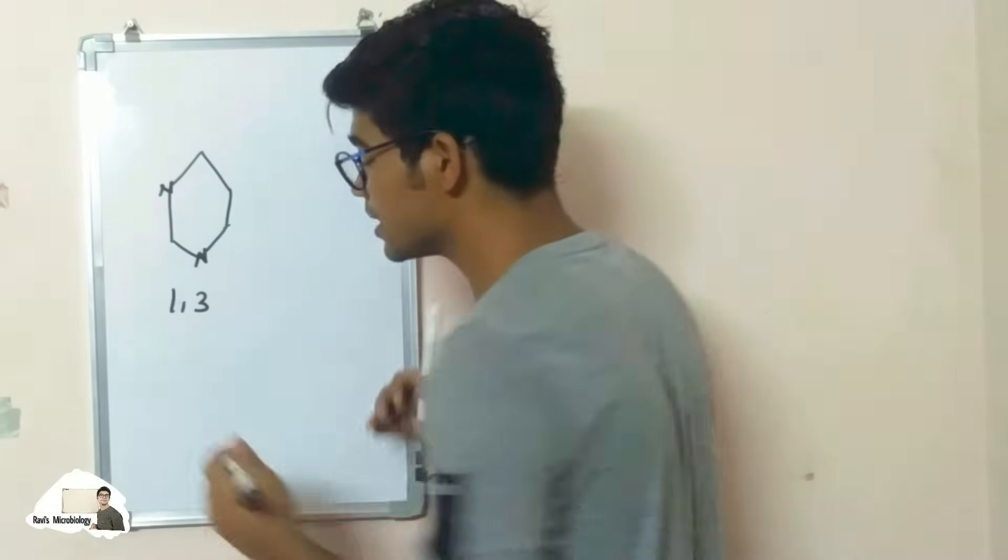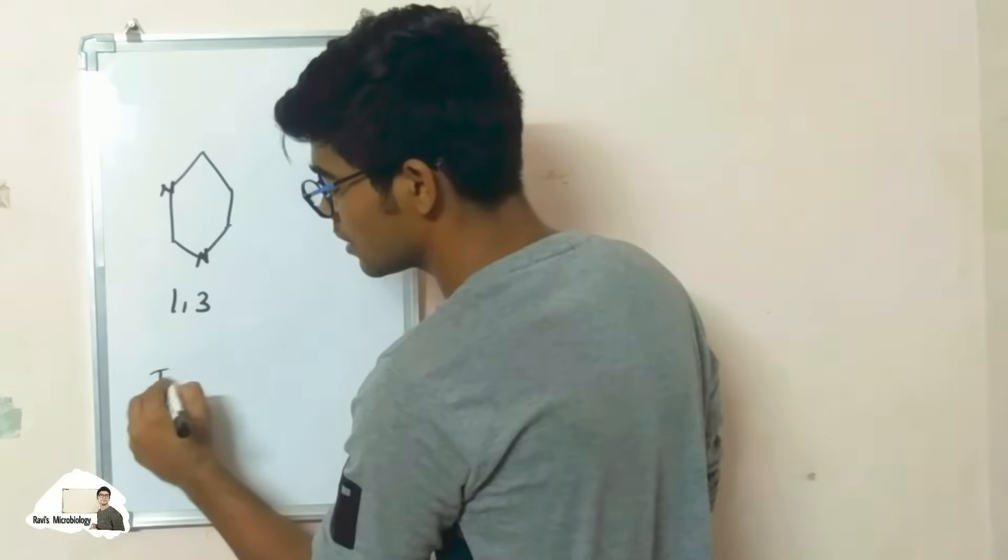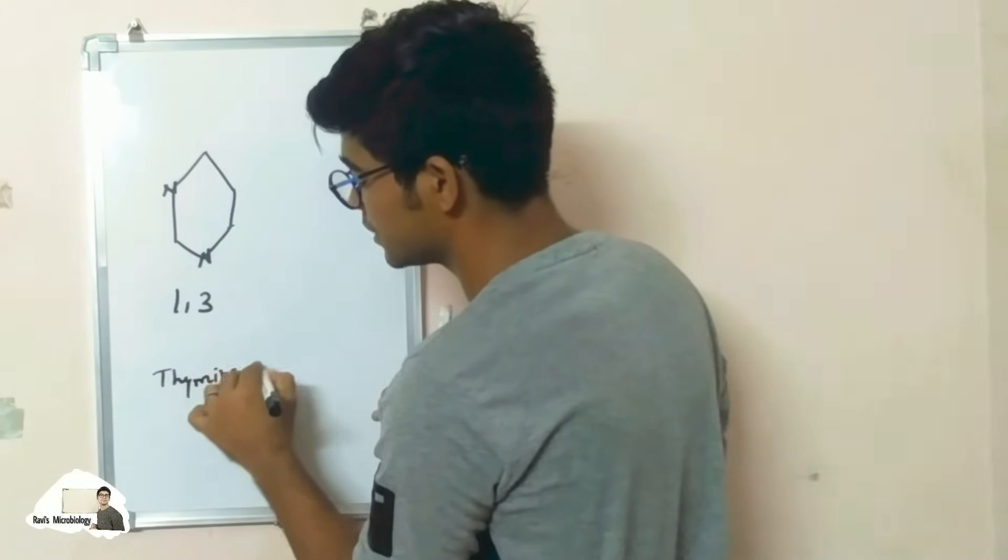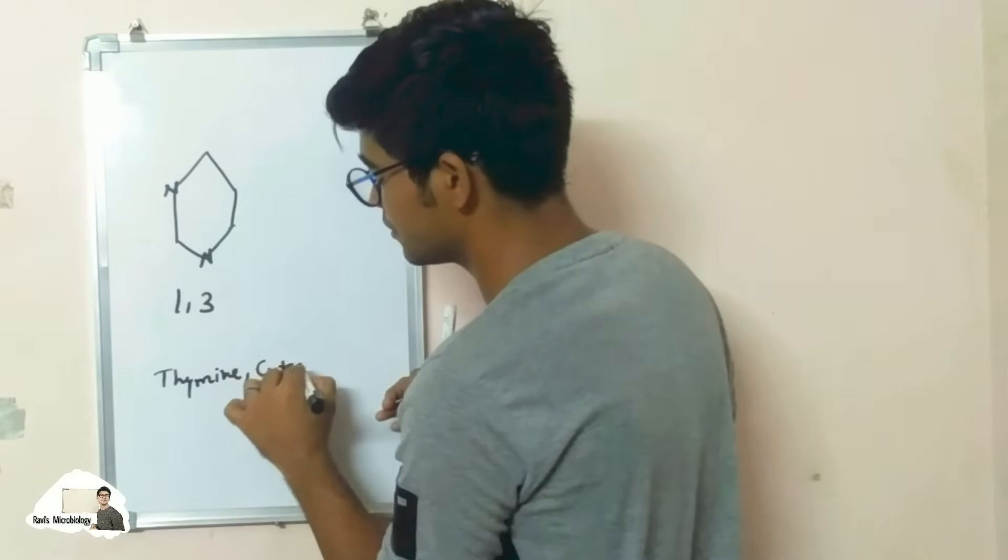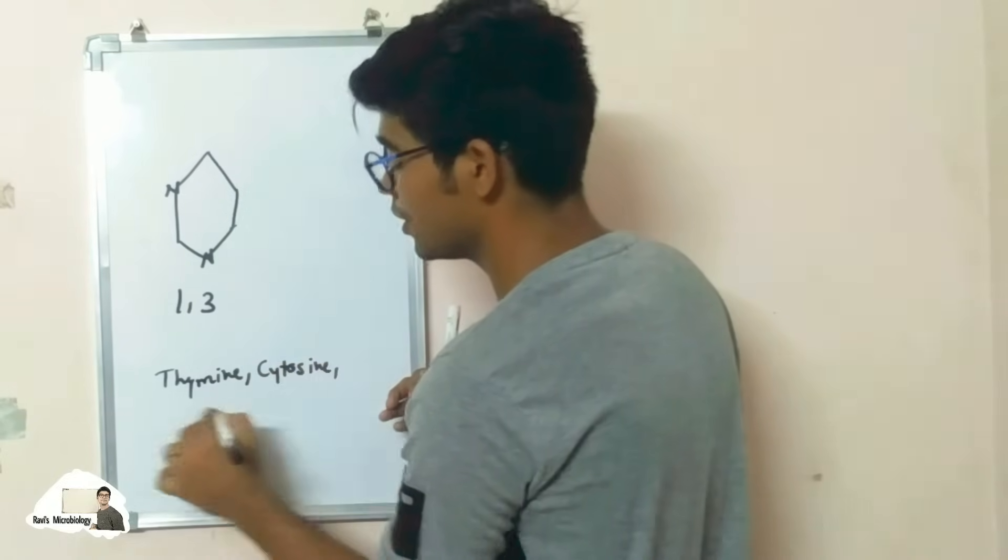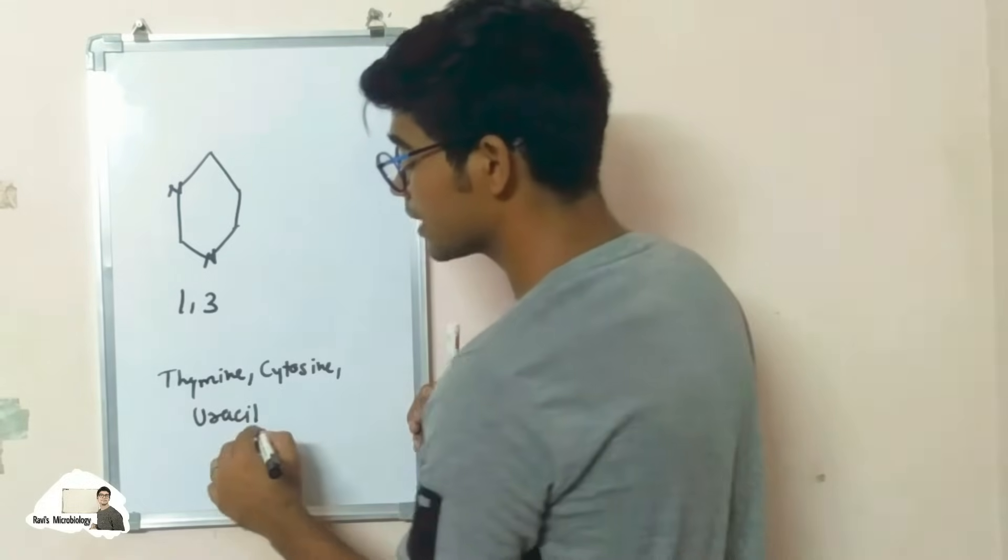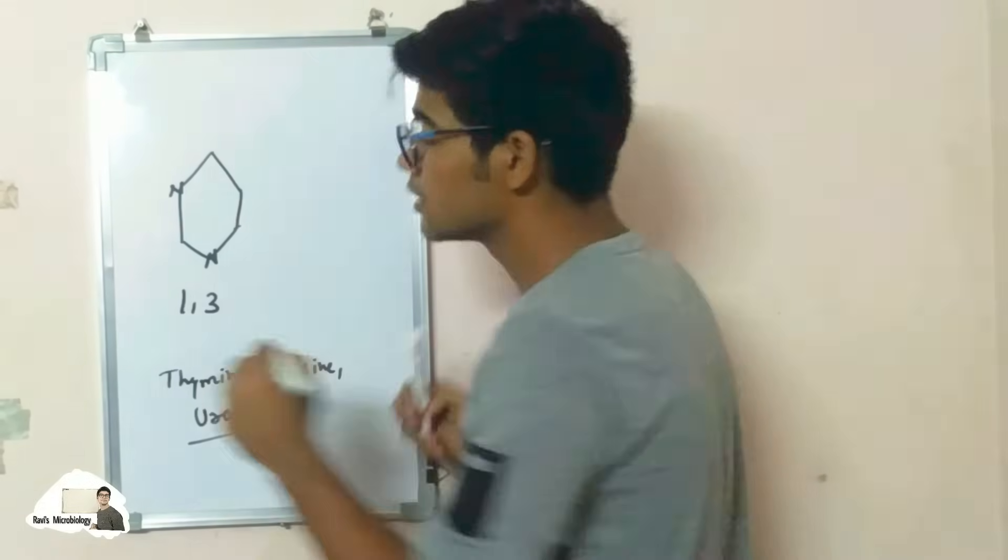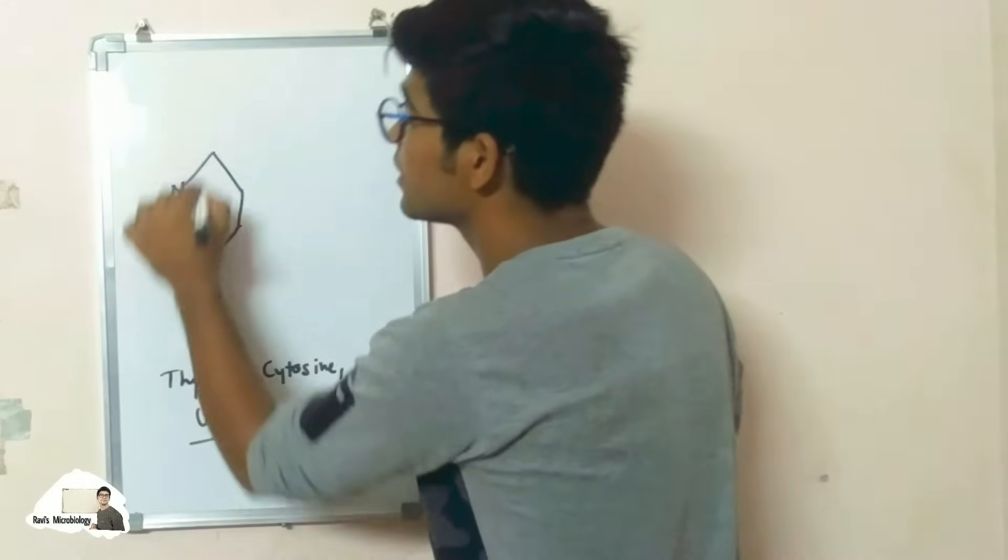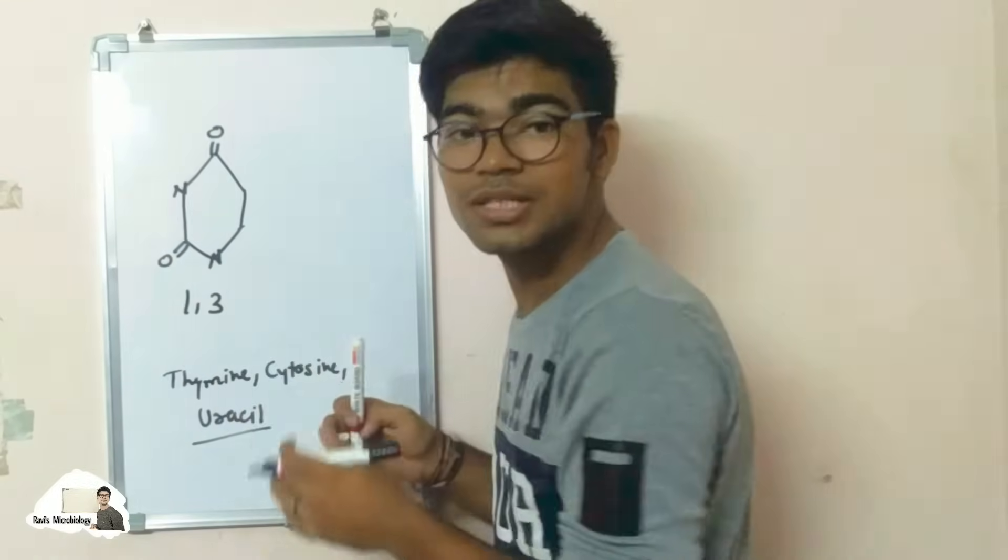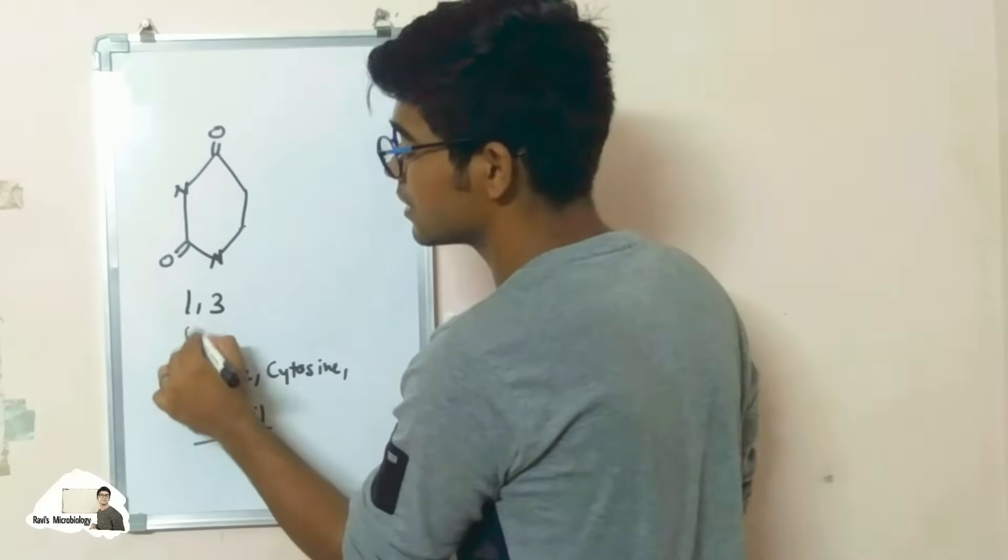So this is the basic structure of pyrimidine. Pyrimidine contains mostly three types of bases: thymine, cytosine, and uracil. So for making uracil, place at second position and sixth position oxo groups. So this is the basic structure of uracil.